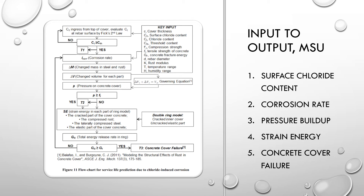The MSU input-to-output model requires knowing where the surface chloride content is and where it's coming from. From the rate of corrosion, there is pressure buildup, strain energy exerted down through the concrete, and ultimately the concrete cover fails.